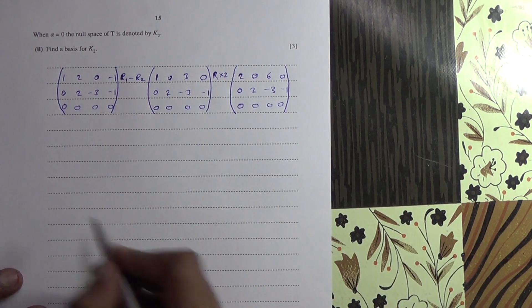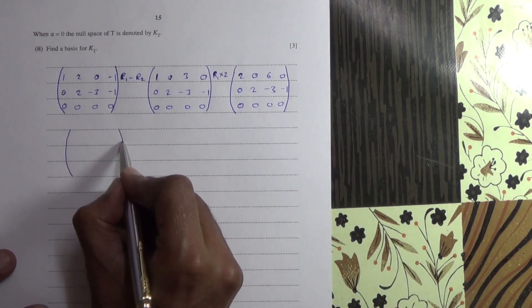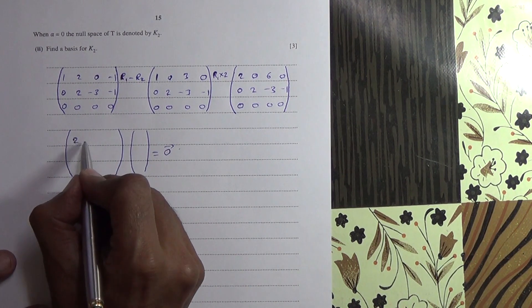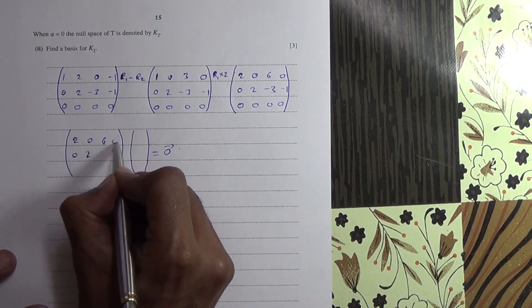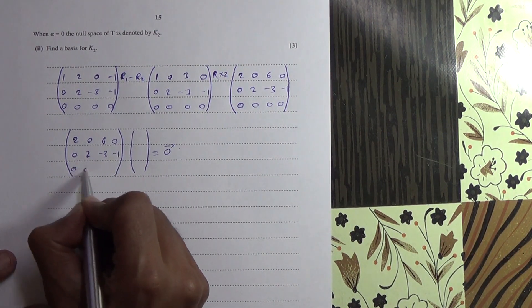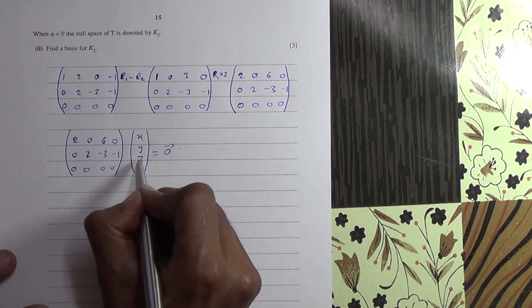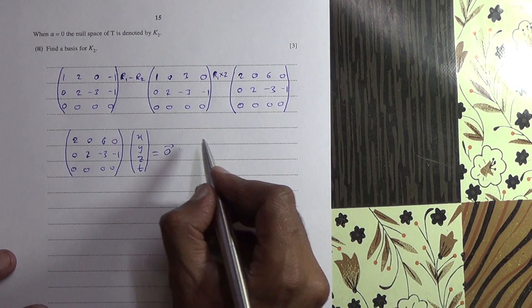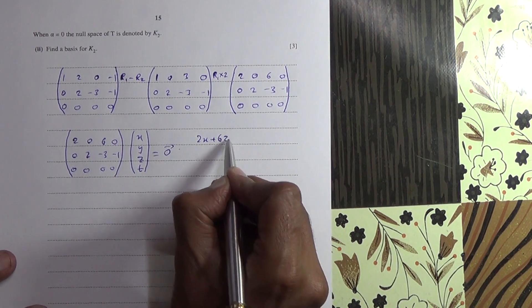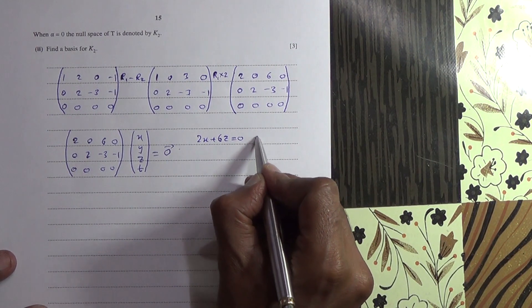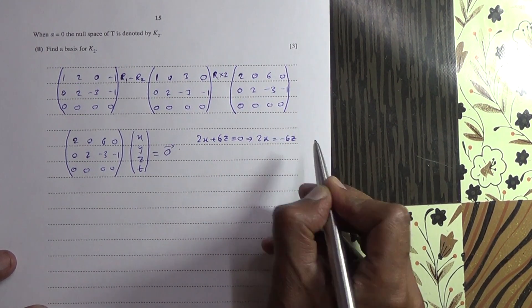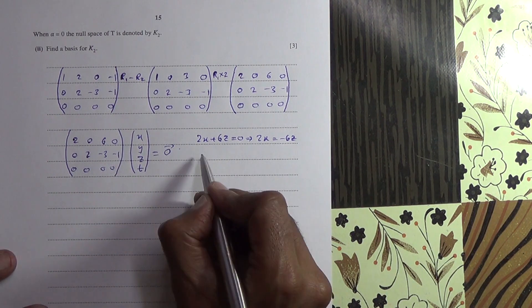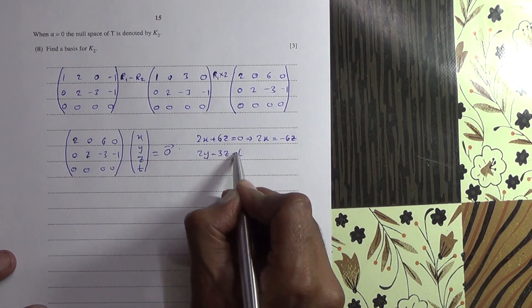And from here we're going to produce a system of equations, equating the 0 vector. So 2, 0, 0, 2, 6, 0, minus 3, minus 1, x, y, z, and t. From here, 2x plus 6z is equal to 0. So what we're saying is that 2x is equal to minus 6z. Then also I've got 2y minus 3z minus t. 2y minus 3z minus t is equal to 0.